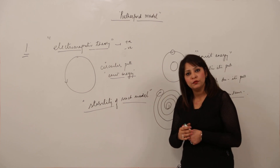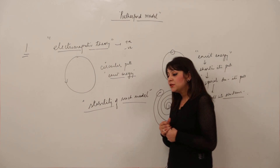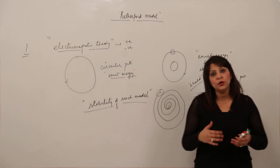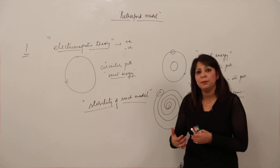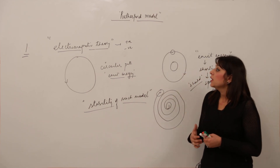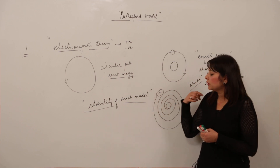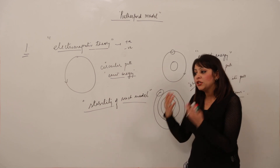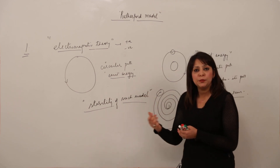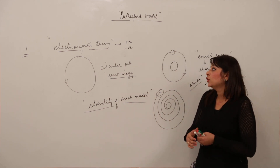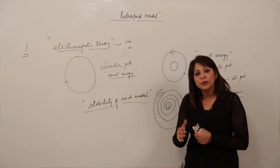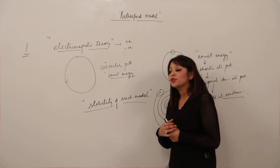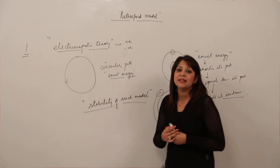That is why the Rutherford model failed. However, he was able to discover the nucleus, which was accepted. The next attempt was made by Niels Bohr, and in Bohr's model, the nucleus remains the same, and the positive charge present in the nucleus as stated by Rutherford is also the same. So Rutherford was able to discover the nucleus, but the model was not successful because he was not able to explain the electron distribution exactly.